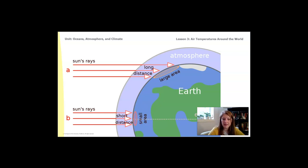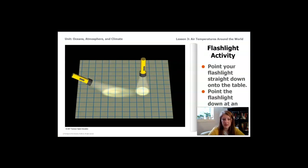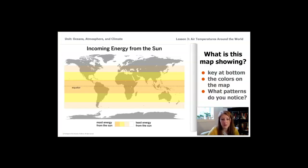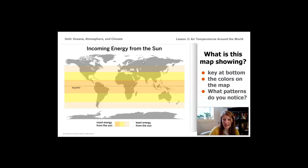That's what's happening on our planet. The amount of energy coming in near the poles is less intense than the energy coming in at the equator. Locations on Earth near the equator actually get more energy from the sun than locations further away, because the energy is spread over a greater distance. If our planet were a cube or flat, that wouldn't happen — but because our planet is a globe, that's why the equator is so much warmer than the poles.